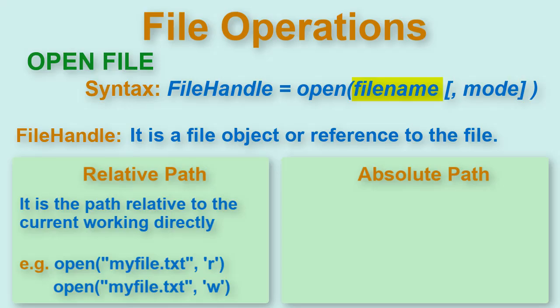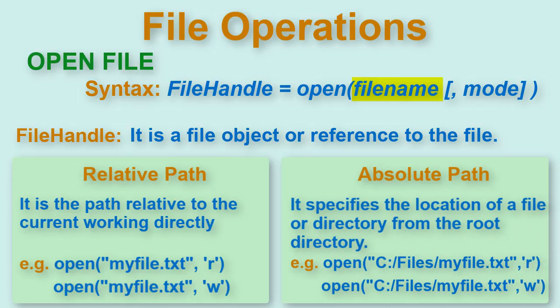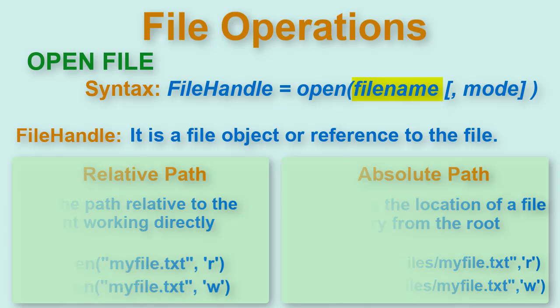Another way is absolute path where you give the full path name with drive and directory and then the file name with extension. This is also one of the questions which is asked: What is the difference between absolute and relative path?